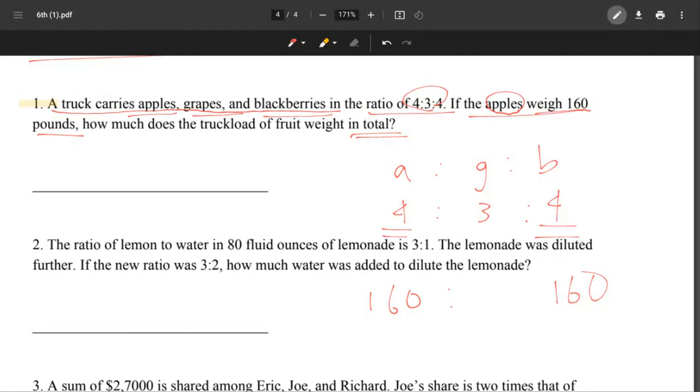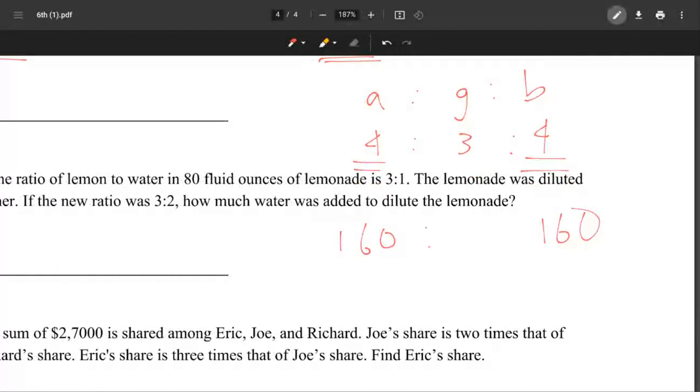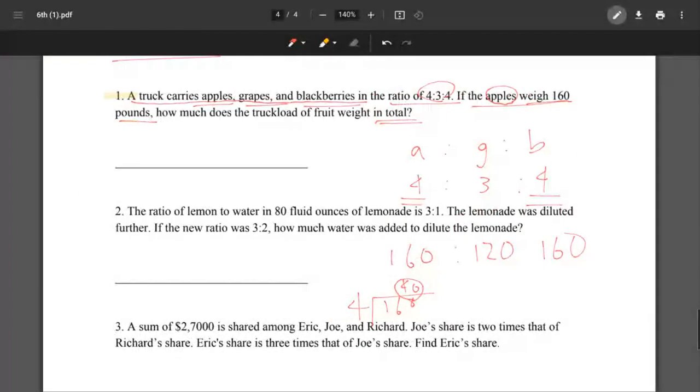To figure that out, we're going to divide 160 by 4, and that's going to be 40. Now we multiply 40 by 3, and that is going to be 120 pounds of grapes.